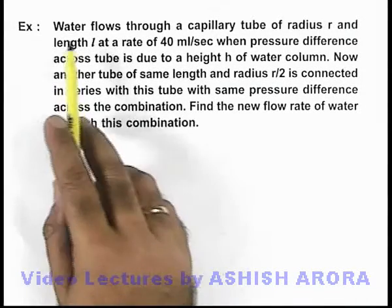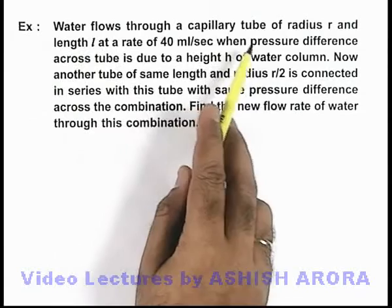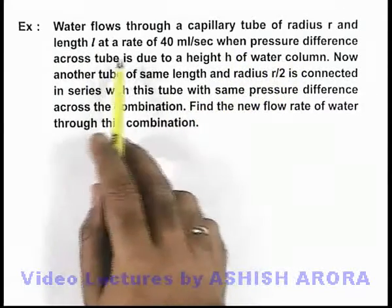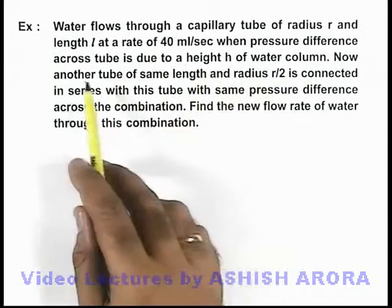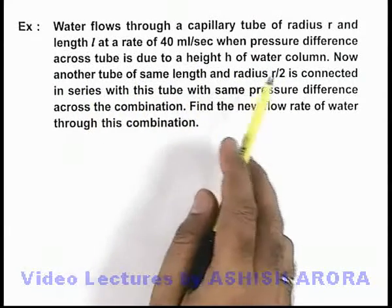In this example, water flows through a capillary tube of radius r and length l at a rate of 40 milliliters per second when the pressure difference across the tube is due to a height h of water column.